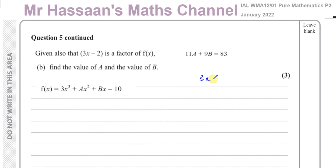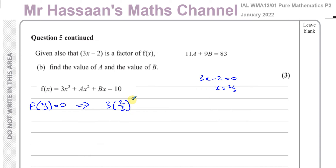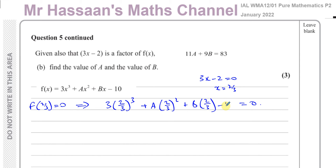The value that makes 3x minus 2 equal zero is x equals 2 thirds. So f(2/3) equals zero: 3 times (2/3) cubed plus a times (2/3) squared plus b times (2/3) minus 10 equals 0. That gives 3 times 8 over 27 plus a times 4 over 9 plus 2b over 3 minus 10 equals 0. Simplifying, 3 cancels with 27 to give 8 over 9, so we have 8 over 9 plus 4a over 9 plus 2b over 3 equals 10.